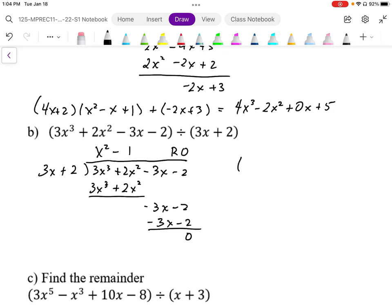If I were to rewrite this in its multiplication form, I get (x² - 1)(3x + 2) equals the original polynomial. This allows me to start factoring and eventually solve these if they were equations.